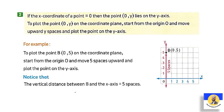Remark 2: if the x-coordinate of a point equals zero, then the point (0, y) lies on the y-axis. This can appear in exams as complete or choose questions. If x is zero, the point must be on the y-axis. For example, (0, 5): from the origin, go up five steps on y — the vertical distance is five spaces.